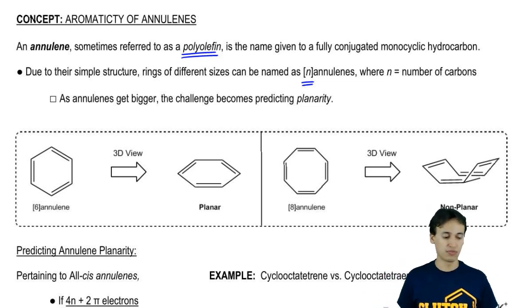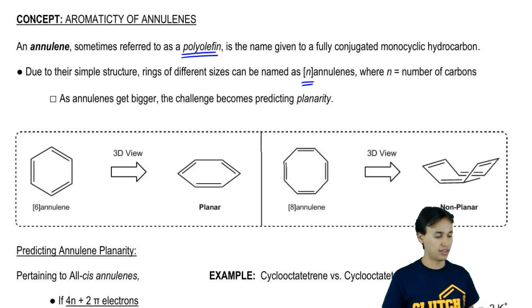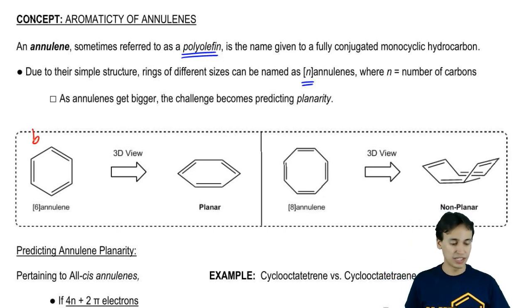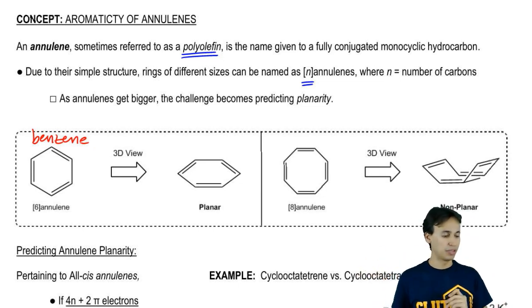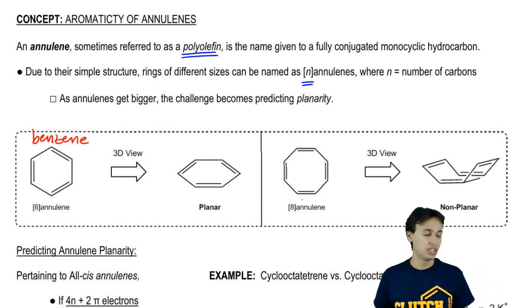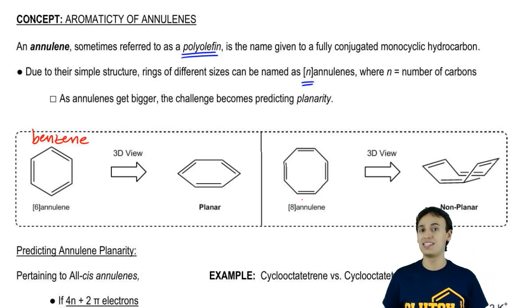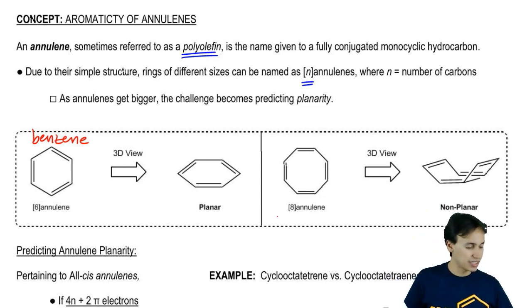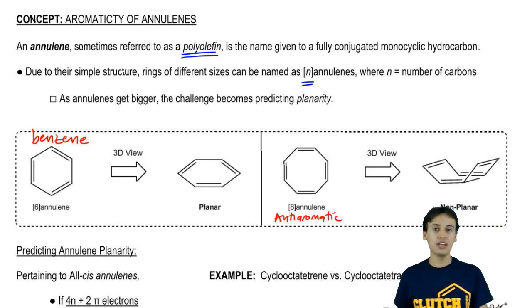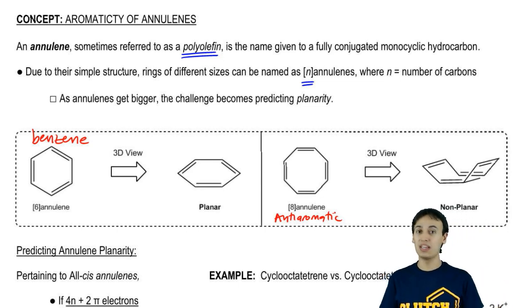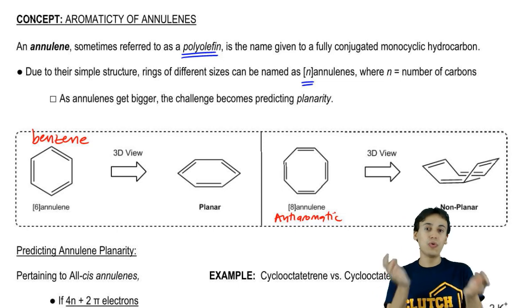I'm going to teach you these rules just to be comprehensive, but keep in mind you might not have to use this on the test at all. Here's the difference between 6-annulene and 8-annulene. 6-annulene or benzene is too small to fold, so it's just going to be planar. Whereas 8-annulene would normally be anti-aromatic—this is an anti-aromatic molecule if drawn planar. But what 8-annulene actually does, because it hates being anti-aromatic, is it folds up.